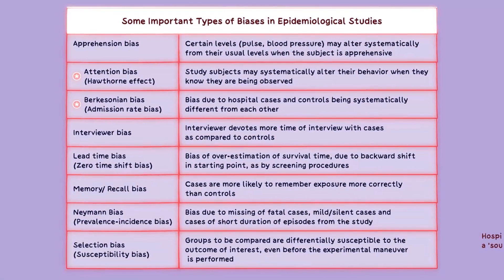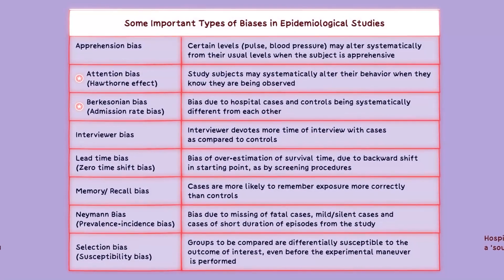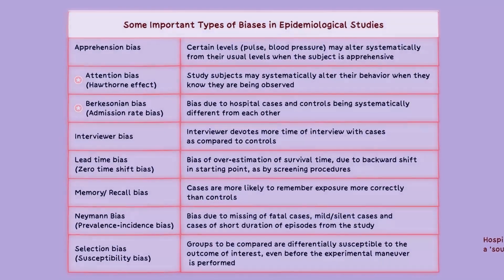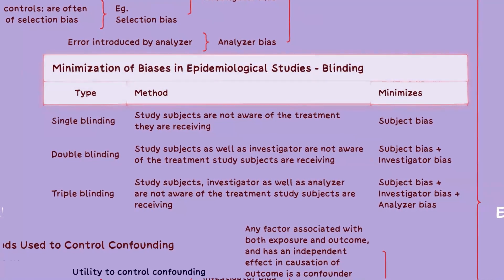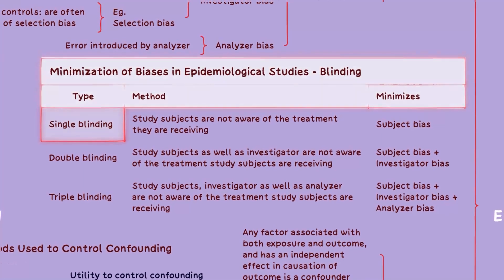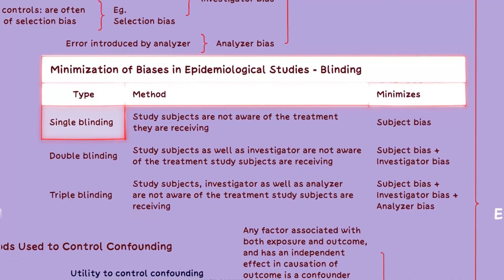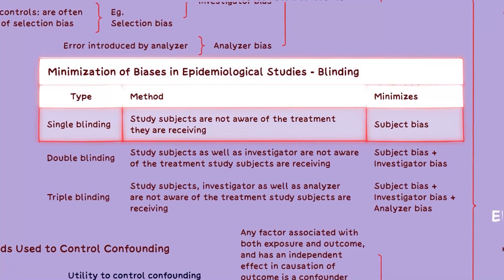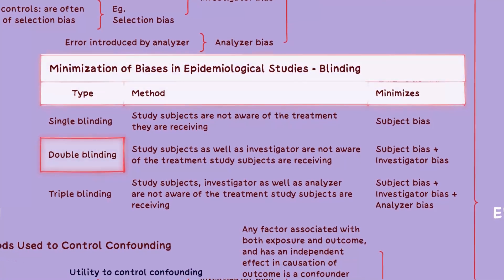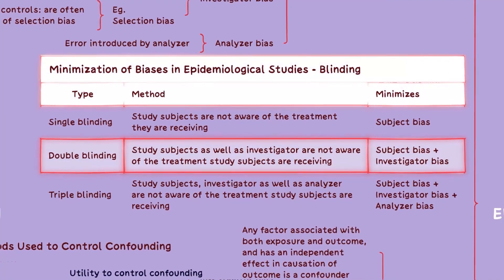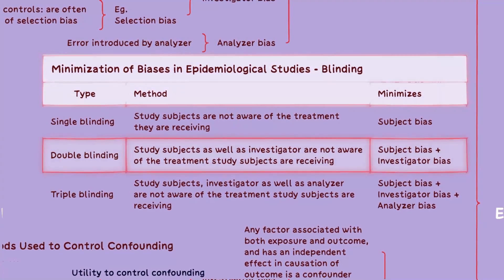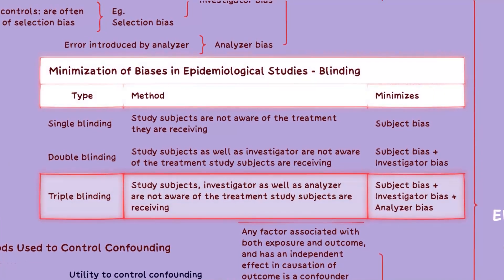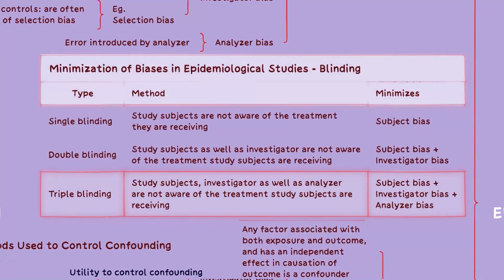To minimize biases in epidemiological studies, we make use of blinding. It can be either single, double, or triple blinding. In single blinding, study subjects are unaware of the treatment they are receiving. In double blinding, both study subjects and investigators are unaware of the treatment being administered. In triple blinding, study subjects, investigators, and analyzers — all three — are unaware of the treatment assignment.